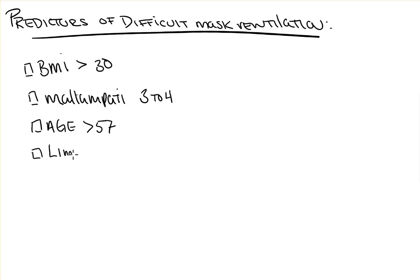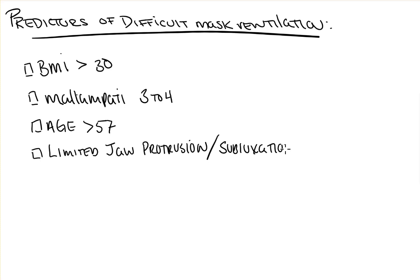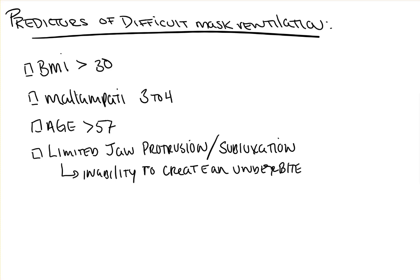Next is limited jaw protrusion, or what's called subluxation. This is the patient's inability to create an underbite — they can't put their bottom teeth over their upper lip. This may be linked to the inability to open the airway adequately with a jaw lift once the patient's airway relaxes and the tongue and tissue fall backwards. Remember that when mask ventilating, you're not pushing the mask to the patient's mouth, but rather you're lifting the patient's jaw to the mask, thus opening the airway. If the patient has poor jaw protrusion, it makes it more difficult to open that airway and move air.